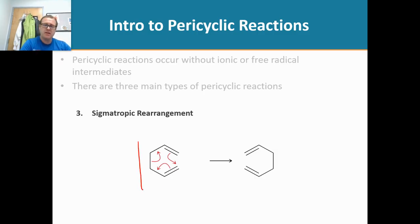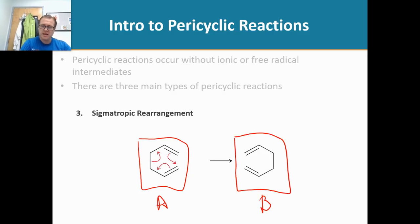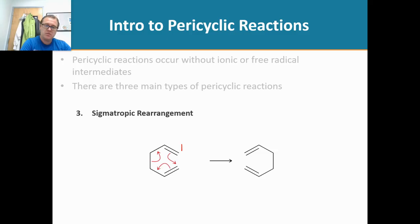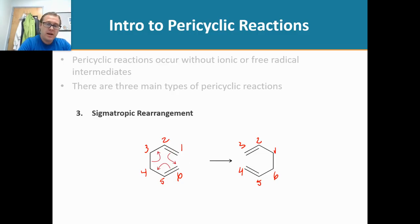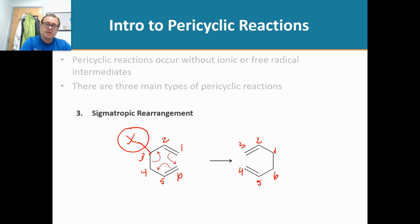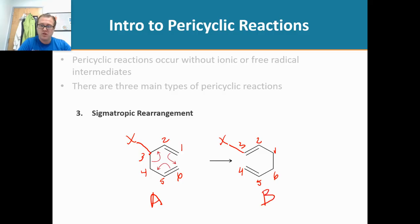At first glance, you may look at molecule A and molecule B and say they're the same thing. In this particular example, yes. But if we number these — one, two — and number the same way, we now have a bond between carbon one and carbon six, where we did not before. Why is this a big deal? Because if we had a substituent on carbon three, when it undergoes a sigmatropic rearrangement, that substituent is still going to be on carbon three. Look at molecule A versus molecule B — they are no longer the exact same molecule.